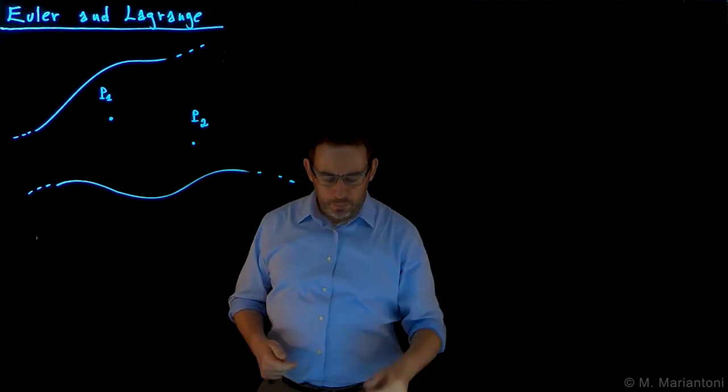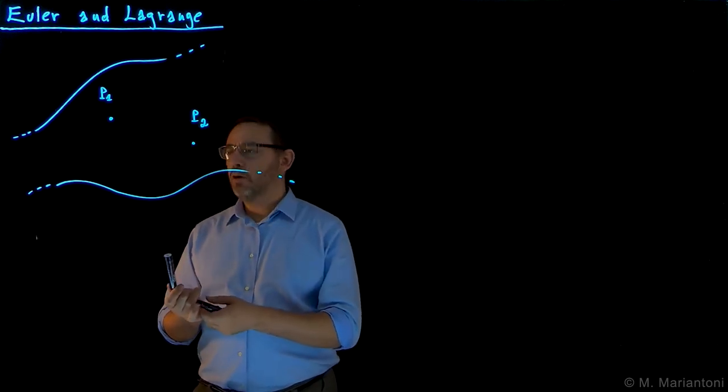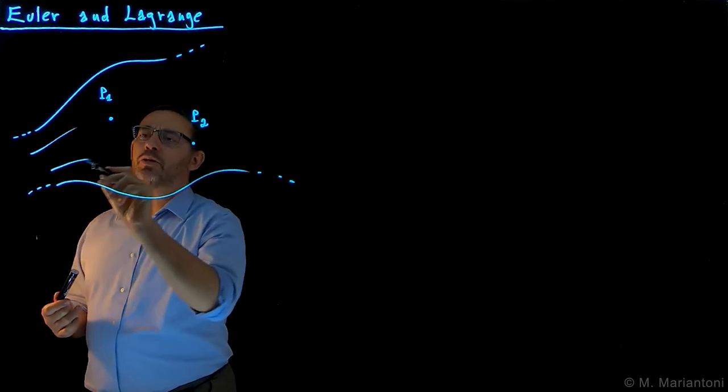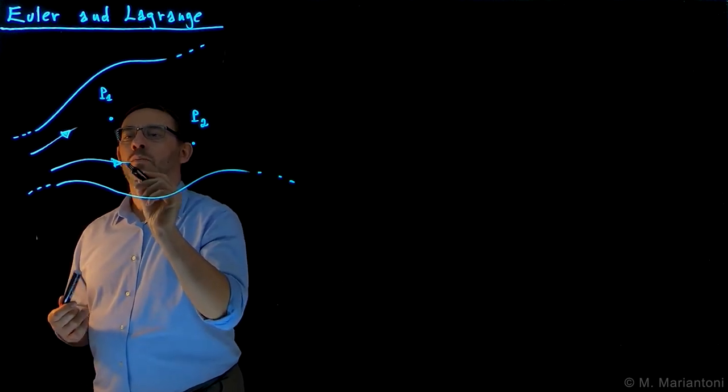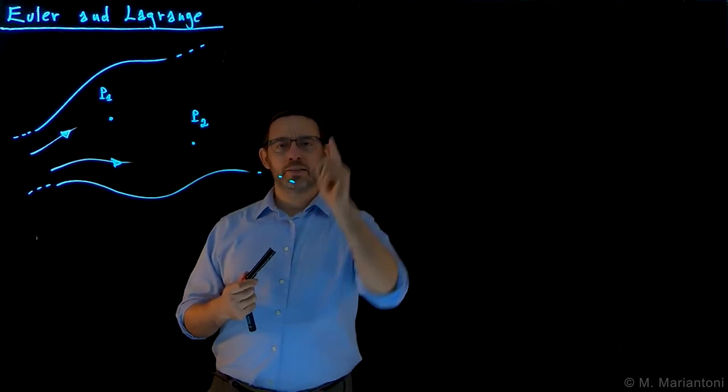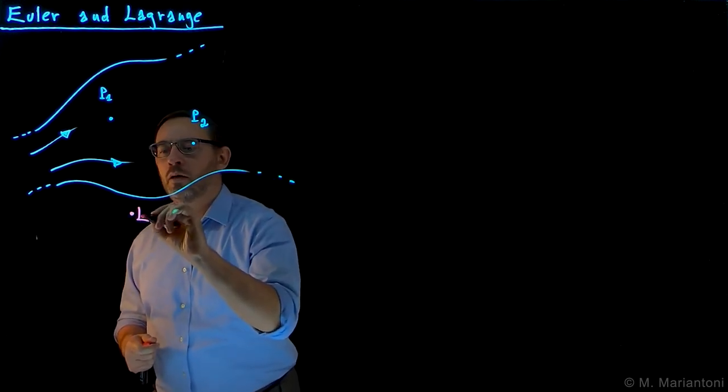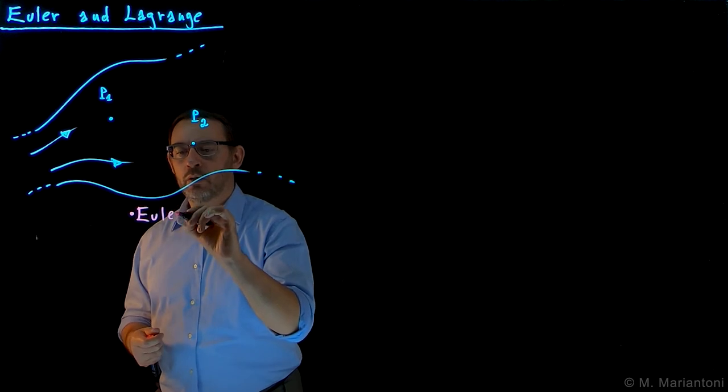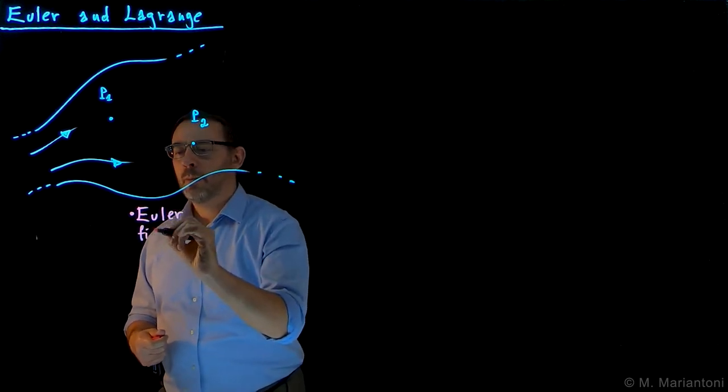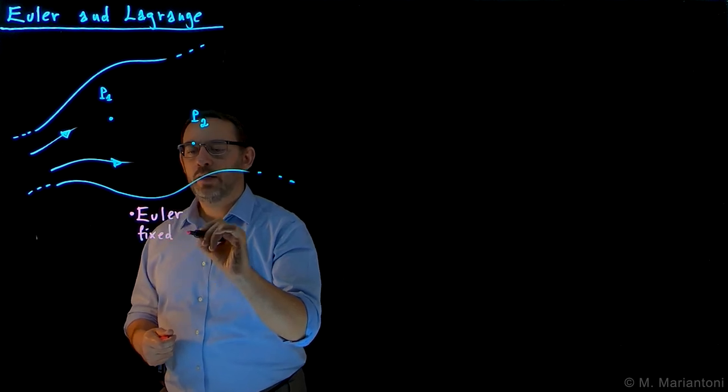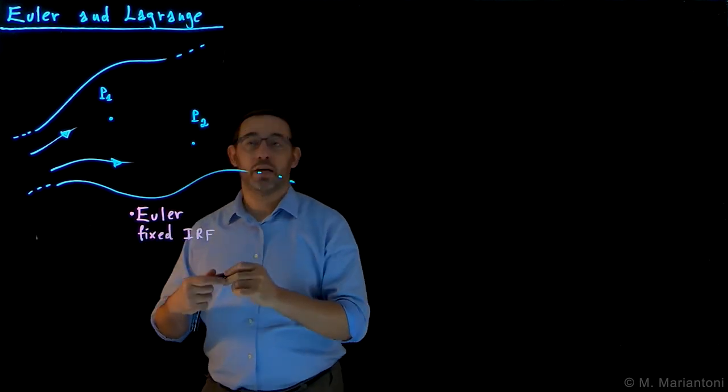Now I'm assuming I'm Euler. So Euler, what Euler does - the flow of course of the river goes in this direction here - Euler decides to sit on the sides of this river, fixed, so without moving, in an inertial reference frame F, IRF. So that's Euler.